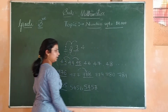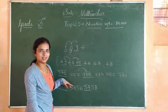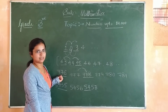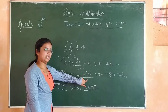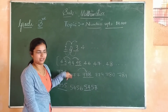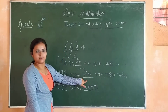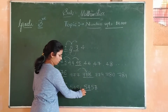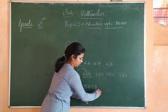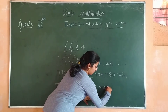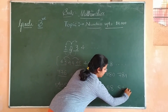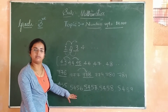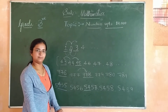Similarly, 779, 780, 781 — all these series of numbers which come one after another are called consecutive numbers. And for our 4-digit example, the consecutive numbers after 5457 are 5458, 5459 and so on, where numbers coming one after another are called consecutive numbers.